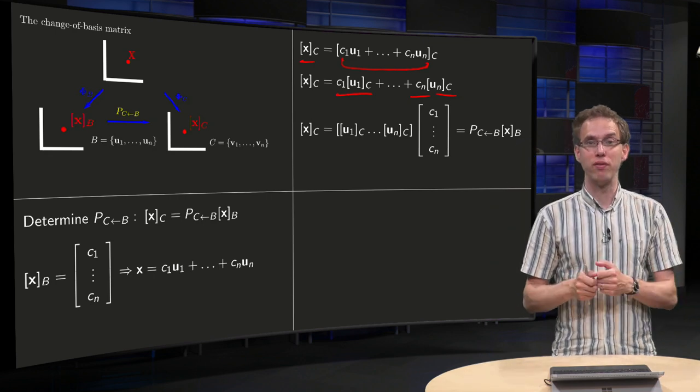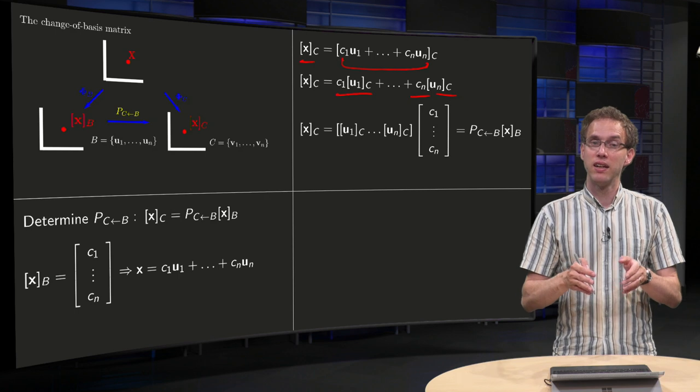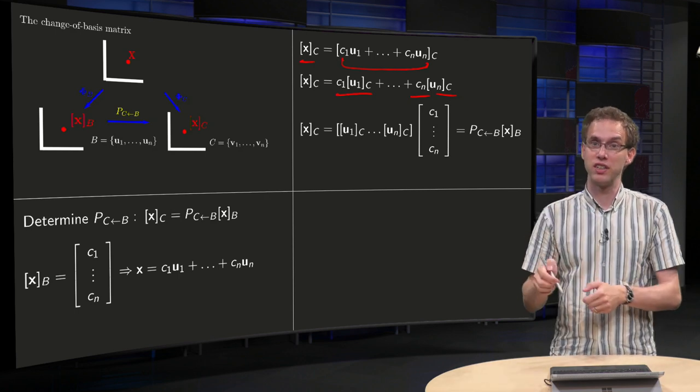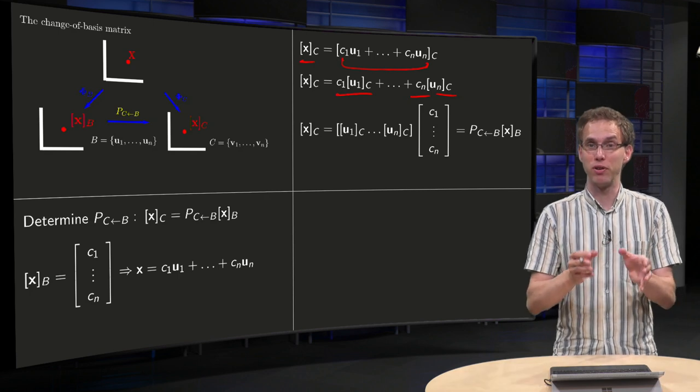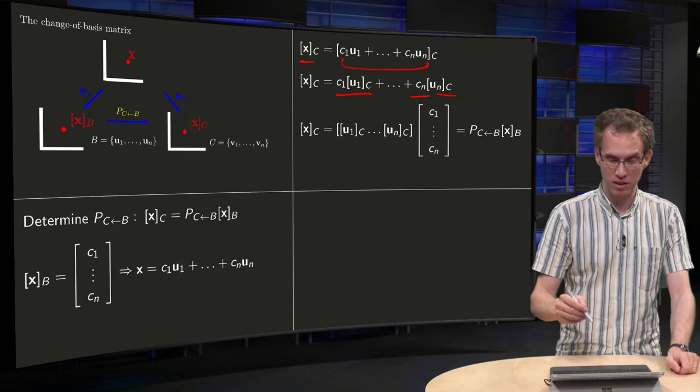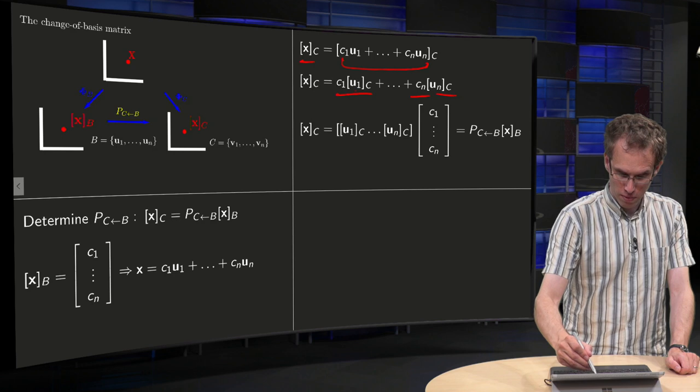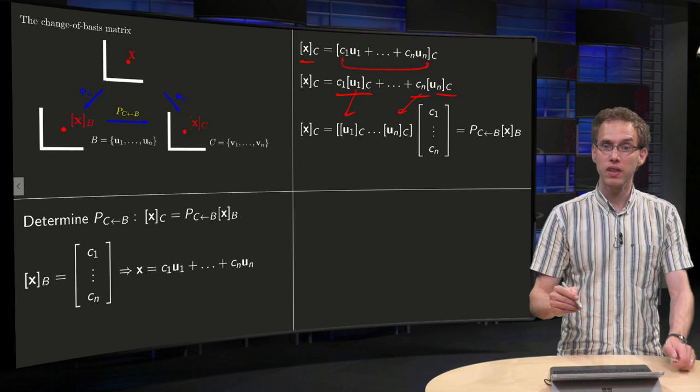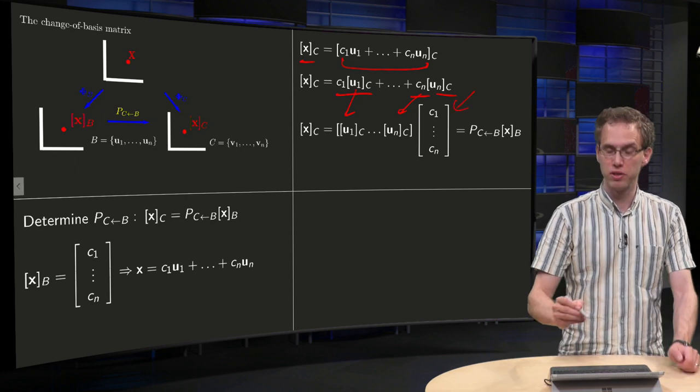So what we have over here is again a product of scalar times a vector plus scalar times a vector, etc. So we can rewrite that as a product of a matrix times a vector, where in the matrix we put our vectors u_1 in C up till u_n in C, and in the vector we put our weights c_1 up till c_n.